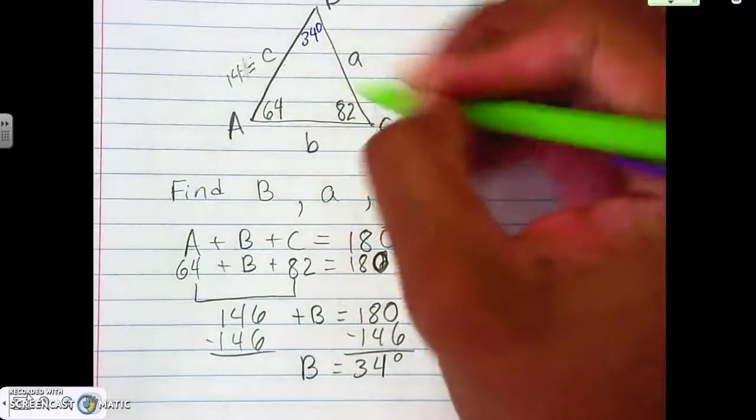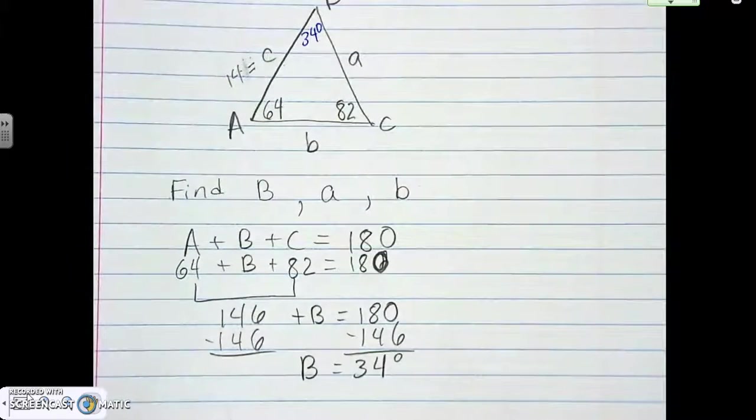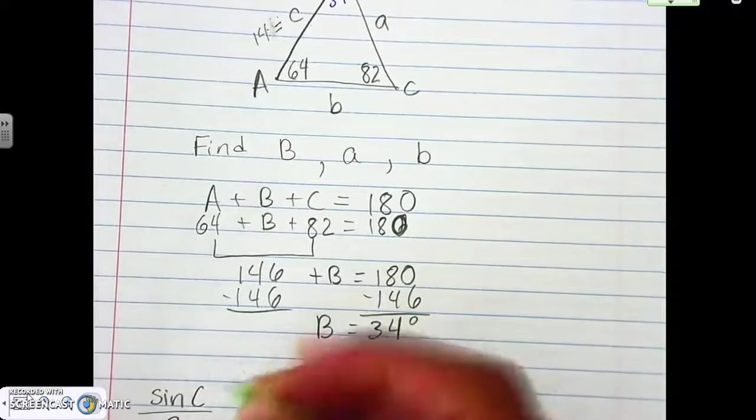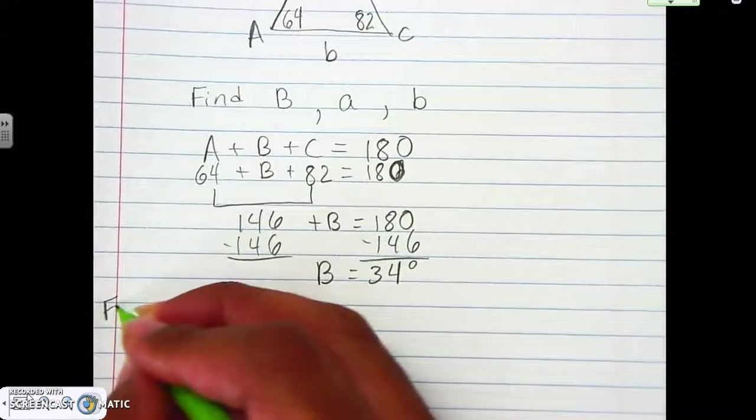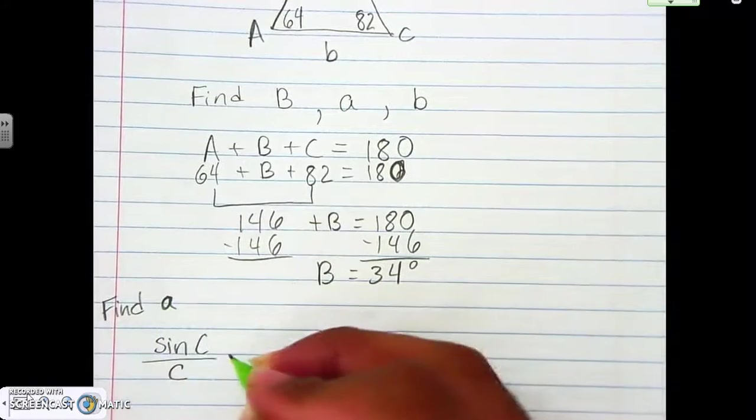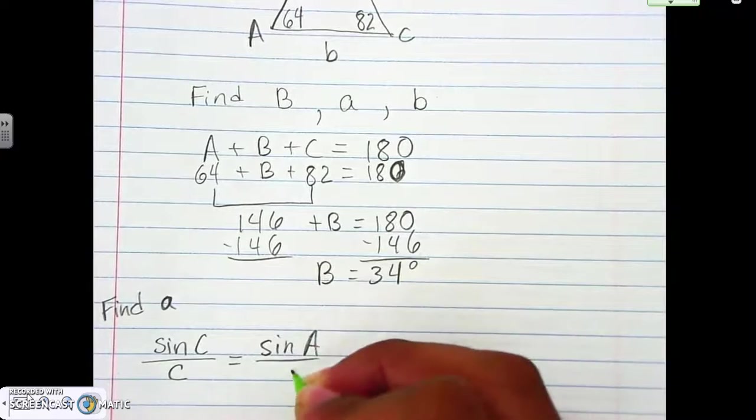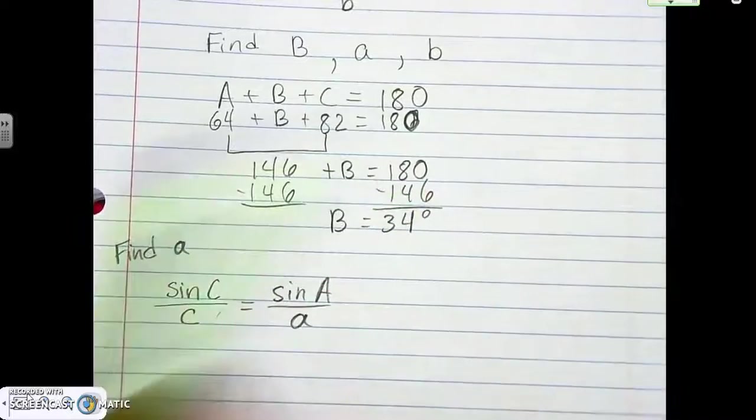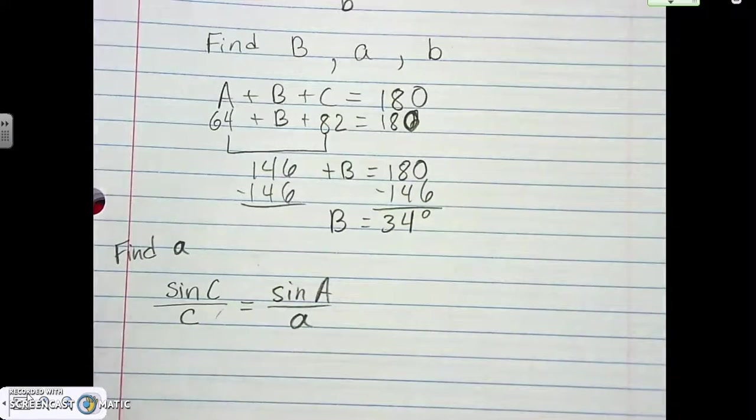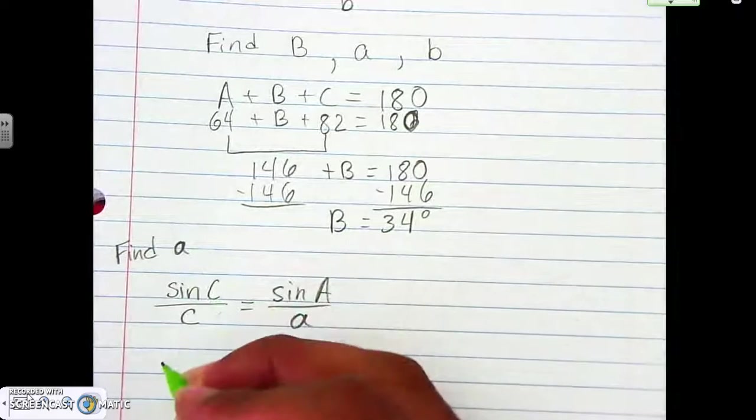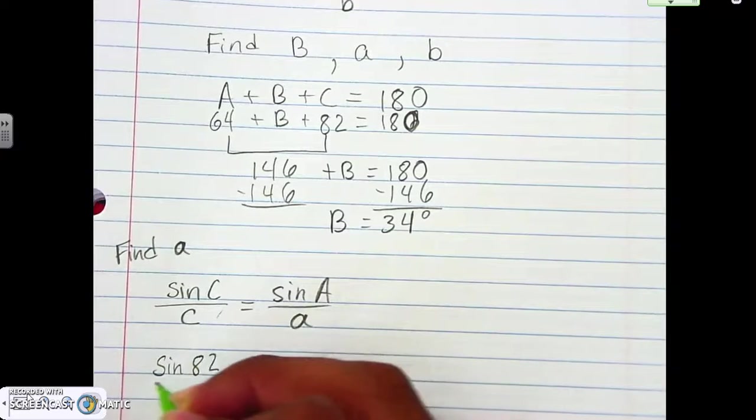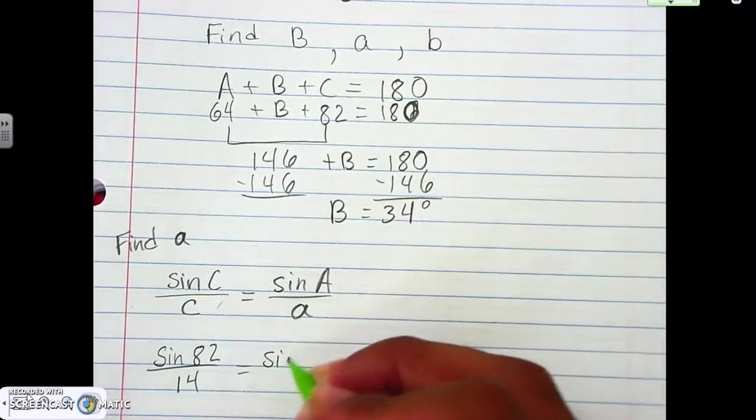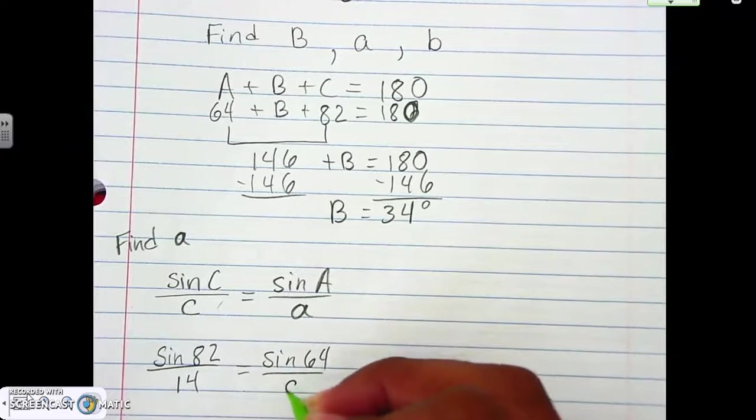So here, again, because we have both C's, let's do law of sine, the C over C, sine C over C, because we have both C's. And let's go to start with finding A. Let's find A. So that means we're going to do sine A over A. So we gave, they gave us both C's and we need to use, we need to find A. So filling everything in here, let's go fill it here. So angle C is 82, and side C is 14. Angle A is 64, and side A is A, because we don't know what it is.